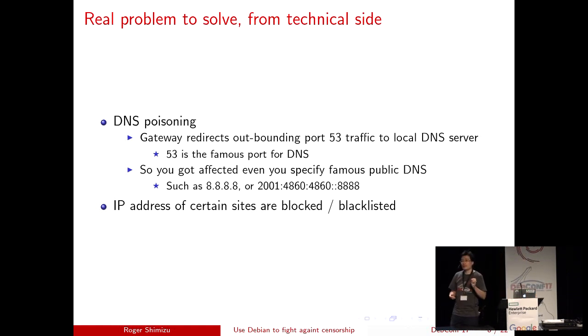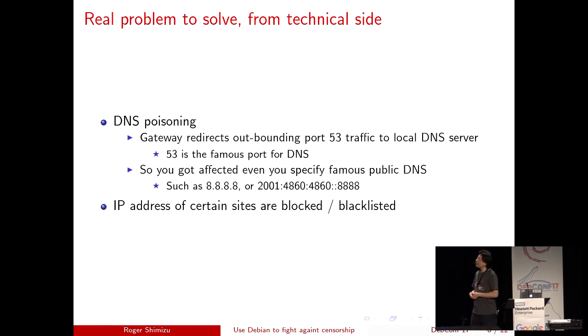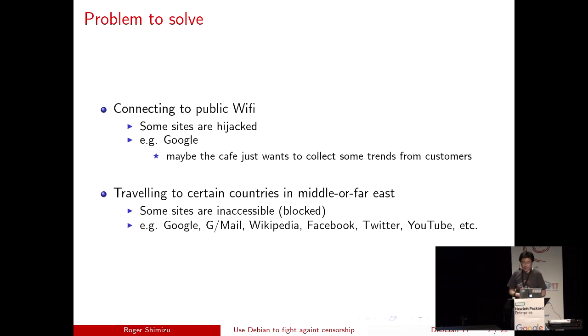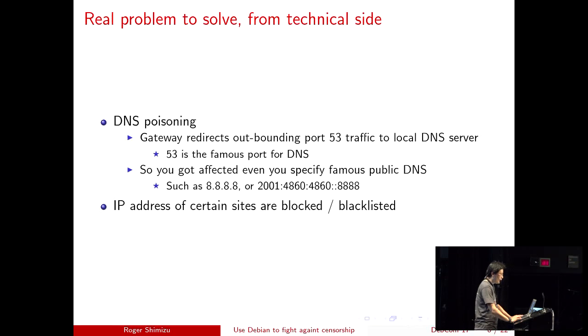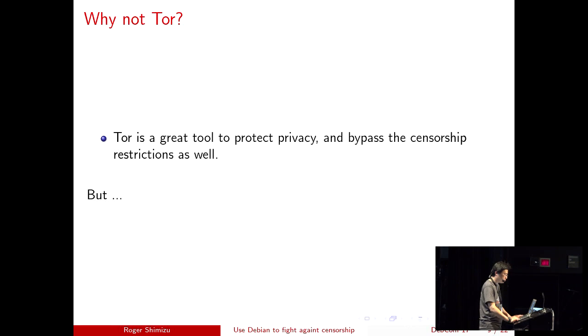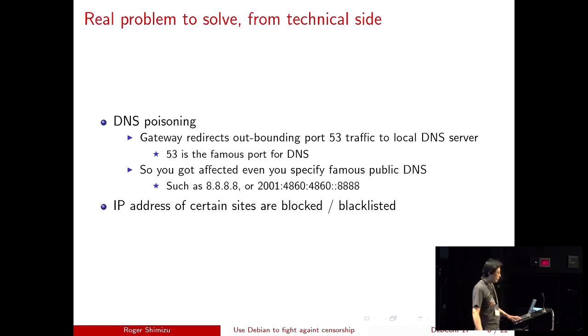Here's the real problem. Why can't we use those sites, and why is internet hijacked in the cafe? The real problem is DNS poisoning — you get a DNS result that is not correct, tampered by maybe the DNS server at the cafe or restaurant. The second problem is that the IP addresses of certain sites are blocked in some countries.